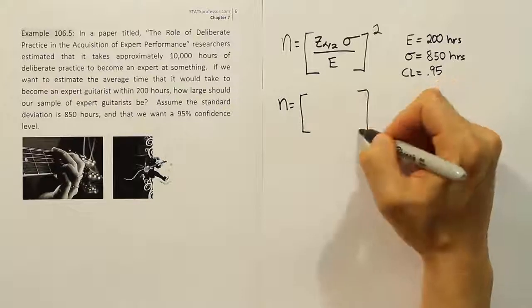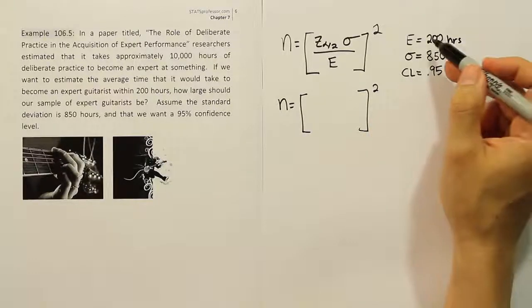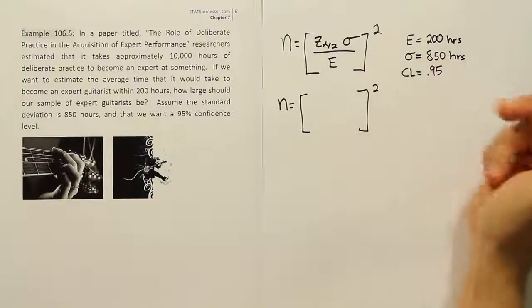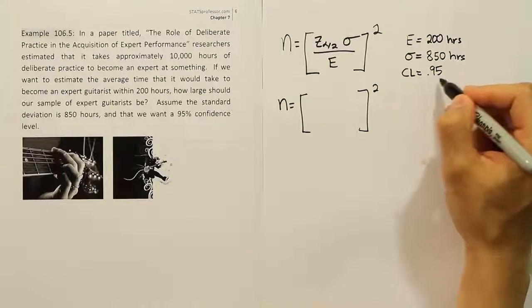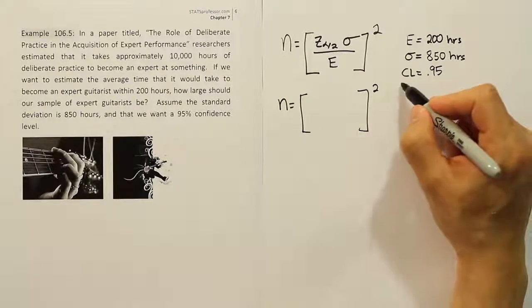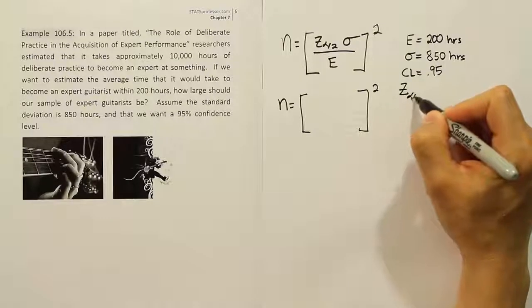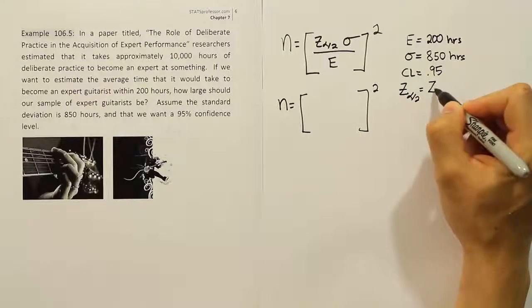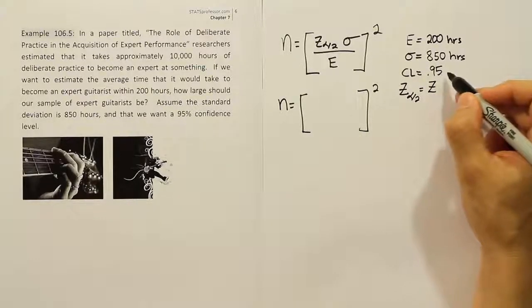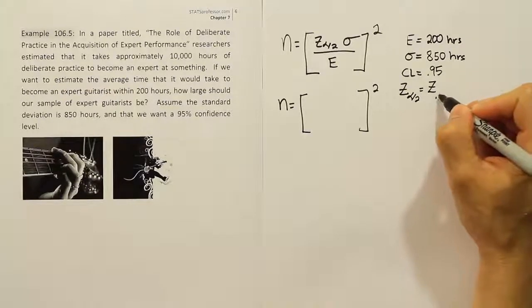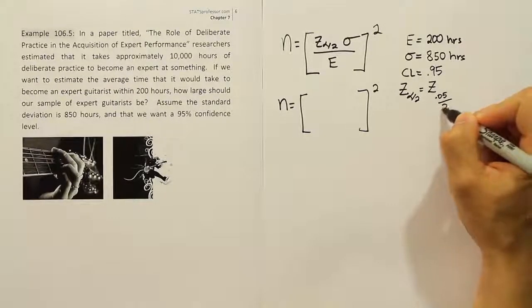If I try to fill in the formula now, I have E and σ, but I'm missing z_{α/2}. I find that using the confidence level. If we're looking for z_{α/2}, what's α if the confidence level is 95%? α is 0.05. But then we divide that by 2, so we're actually looking for z_{0.025}.